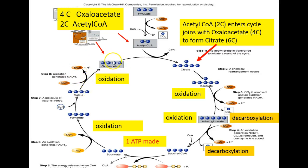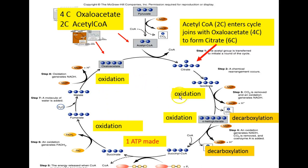The end result is fumarate. Fumarate is converted to malate, and malate is oxidized one more time to regenerate oxaloacetate. The Krebs cycle has thus taken oxaloacetate and acetyl coenzyme A through two oxidation steps, two decarboxylation steps, one phosphorylation that made ATP, and two more oxidation steps.